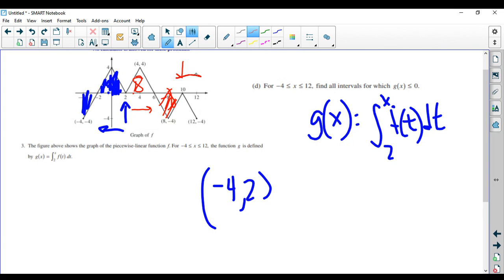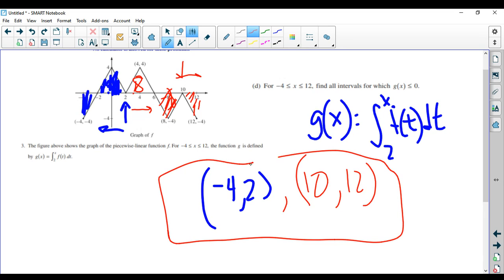And then from 10 to 12, now it's negative again because it's a negative area. I don't care what it's negative for, I guess, right? But I don't care. I just care where it's negative. So it's only then negative again from 10 to 12. So these are the two intervals that G of X would be negative.